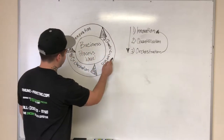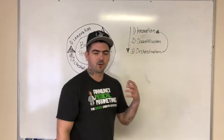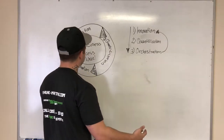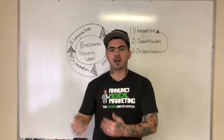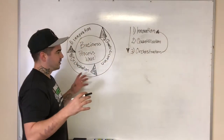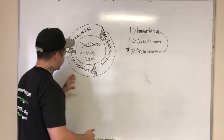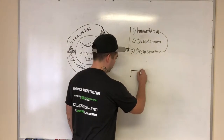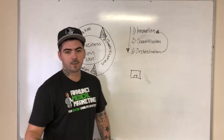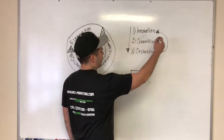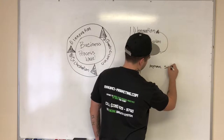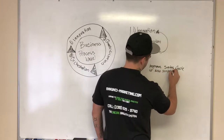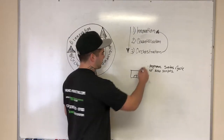So again: innovation, quantification, and orchestration. Innovation is to come up with an idea and start executing it — start putting the roadblocks in place that you need. Quantification is your ability to measure those improvements. Orchestration is to get all of those improvements company-wide. For example, you might start with one office improving the sales cycle. The innovation would be improving the sales cycle with new scripts.